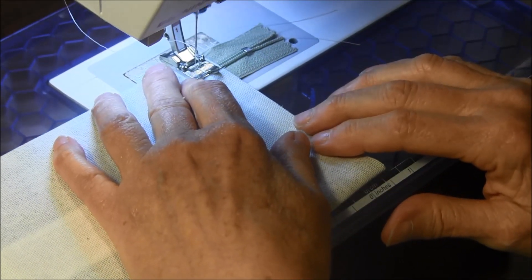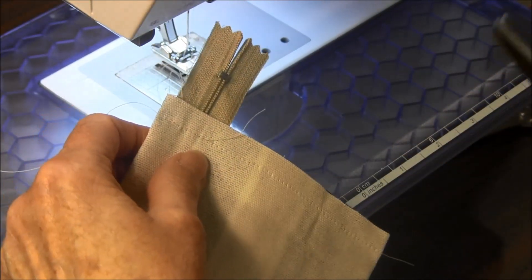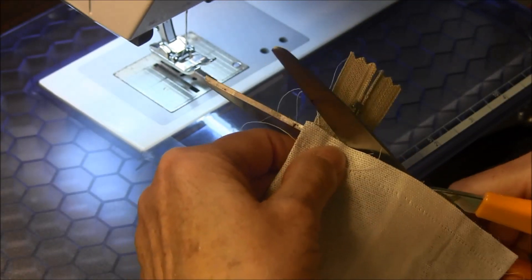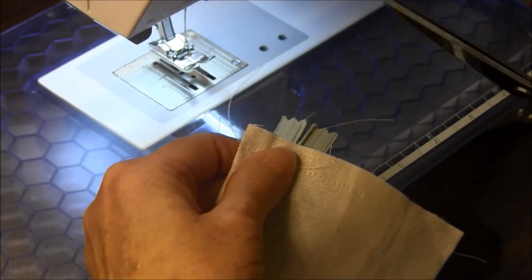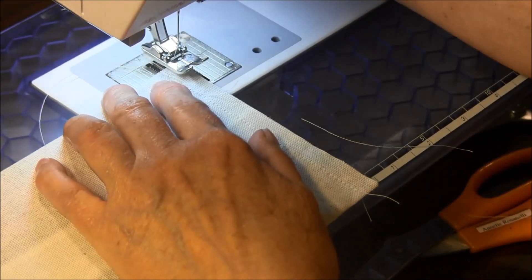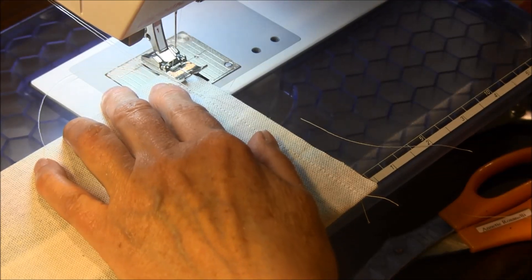Be careful when you get to the zipper. Go slow. Use not your fabric scissors but another pair of scissors to cut the zipper. And now let's zigzag along this edge to keep it from fraying.